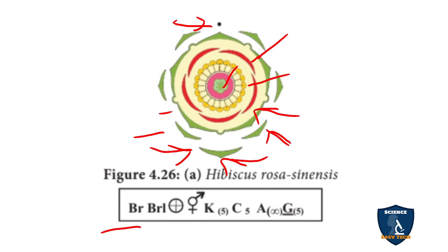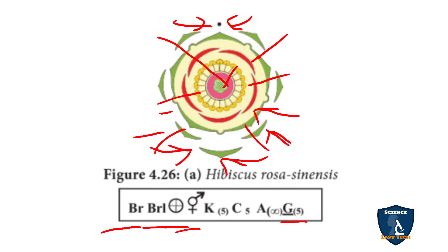For Hibiscus: bract is present — BR; bracteoles present — BRL; actinomorphic; bisexual. Calyx five, fused — K(5). Corolla five, free — C5. Androecium indefinite, united in one bundle — A(∞). Gynoecium five, syncarpous — G(5), superior ovary with the line below G. The circle represents the mother axis of the flower.